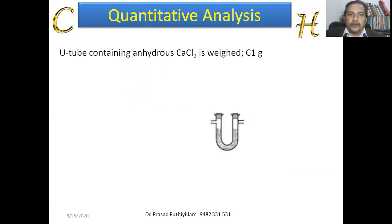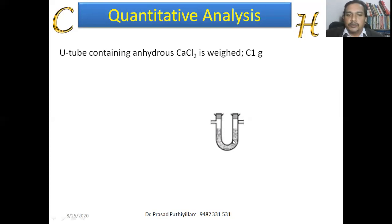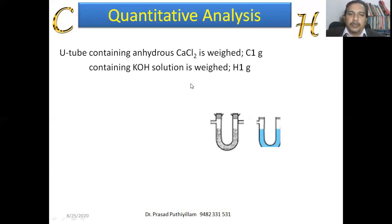To estimate carbon and hydrogen, we need a U-tube — a U-shaped tube — with anhydrous calcium chloride. Anhydrous calcium chloride means calcium chloride without the presence of moisture, that is dry calcium chloride. It is weighed; let this U-tube containing calcium chloride weigh C₁ grams. Then another U-tube containing potassium hydroxide solution is also weighed, and its weight is taken as H₁ grams.